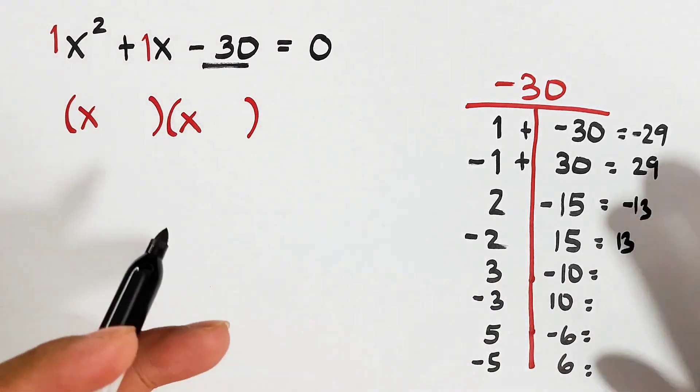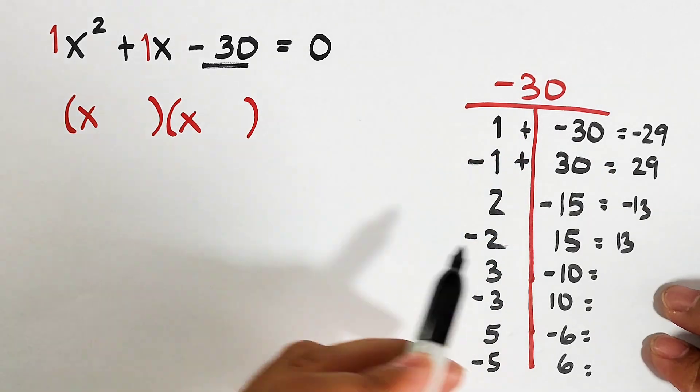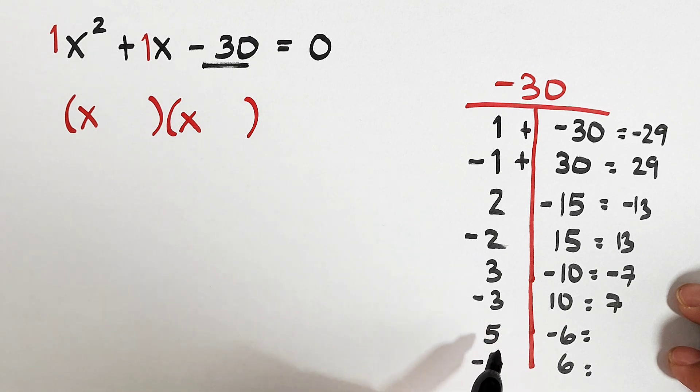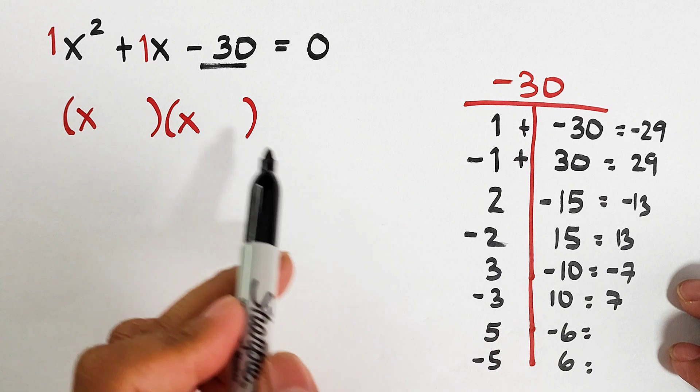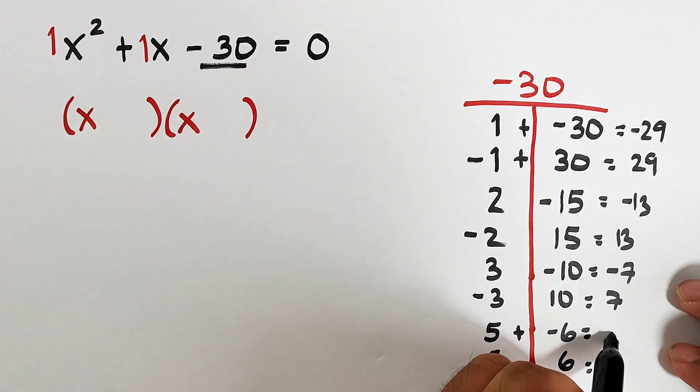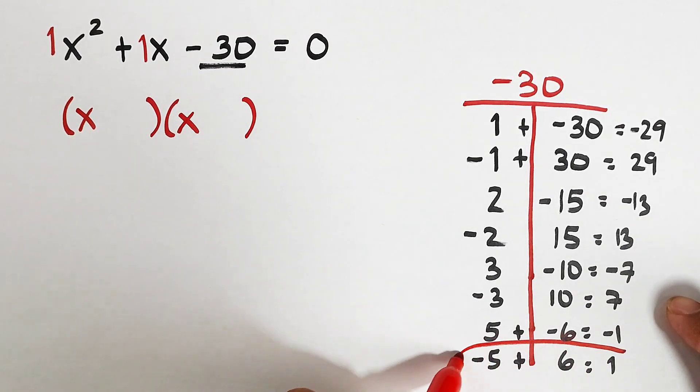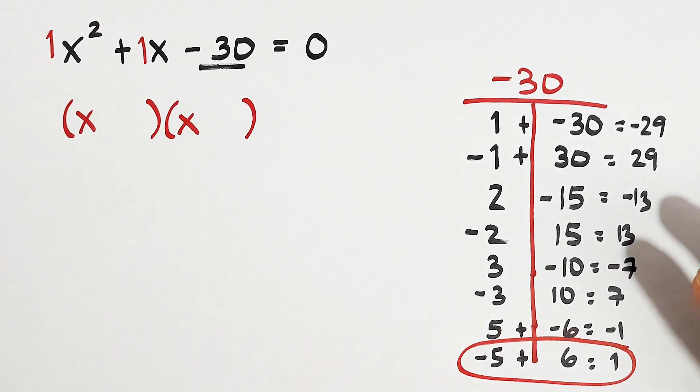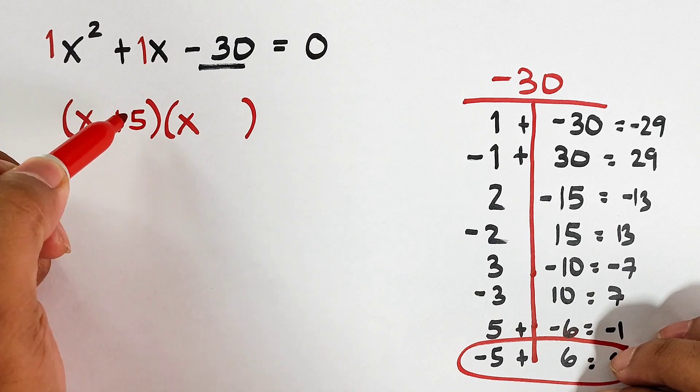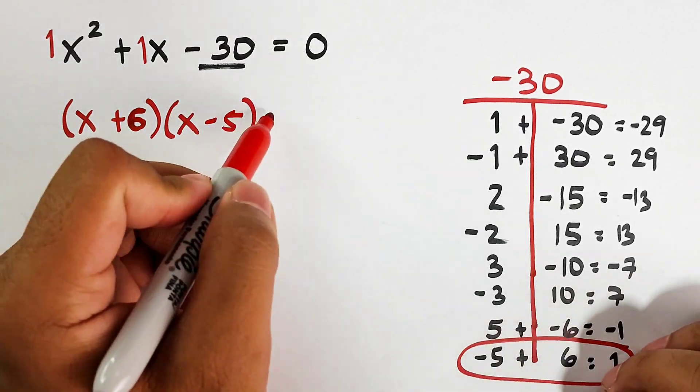Again, guys, why is this negative 29? Because 30 is greater than 1. So we need to copy the negative. Let's continue. This is negative 7. This is positive 7. And as you can see, these two factors are quite good for us to get the desired sum, which is 1. Negative 5 plus negative 6 is negative 1. Negative 5 plus 6 is positive 1. And as you can see, this is what we need. We have negative 5 and positive 6. So we will put here plus 6 then minus 5, and then equal to 0.